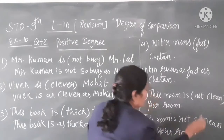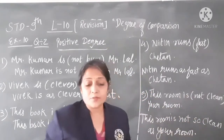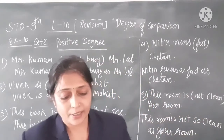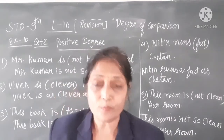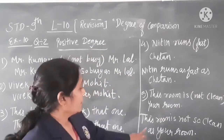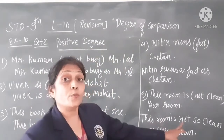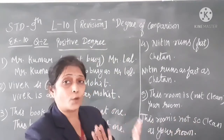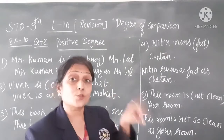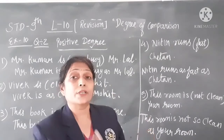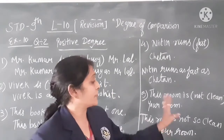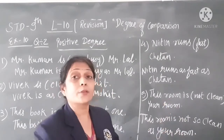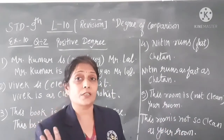Okay, Vidya Mitro, I have explained everything. Let me clarify: 'This room is not so clean' — after 'not so', the adjective comes, then 'as', and then the object. That is the structure to follow.